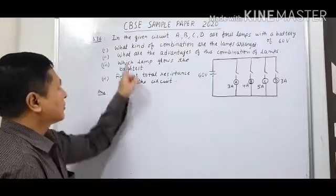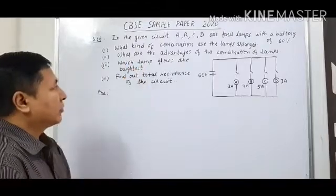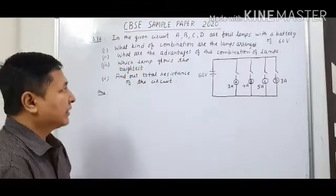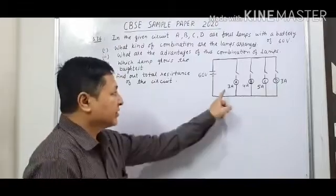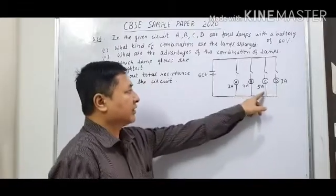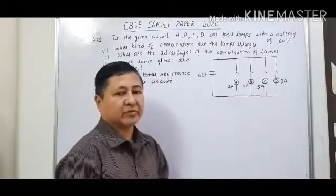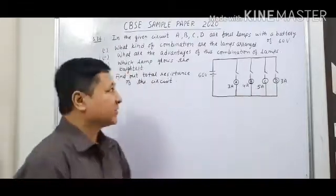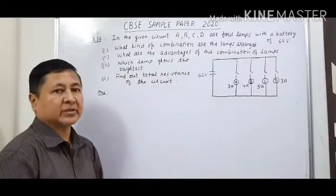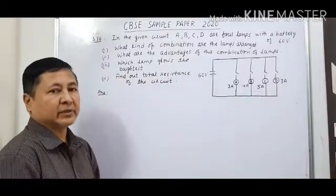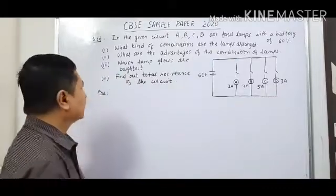The first question is: what kind of combination are the lamps arranged in? As you can see, they are connected in parallel. So the answer is: the lamps are arranged in parallel combination.